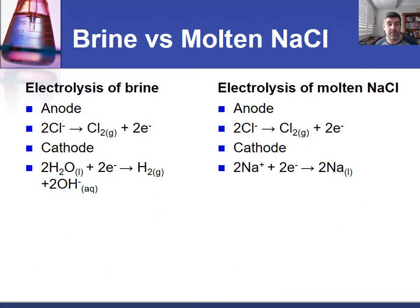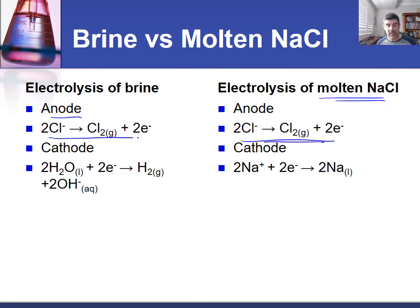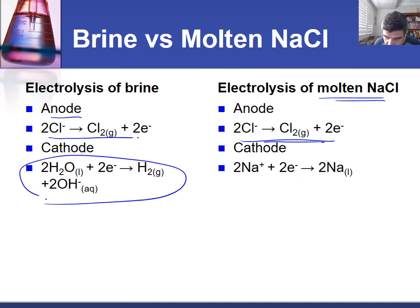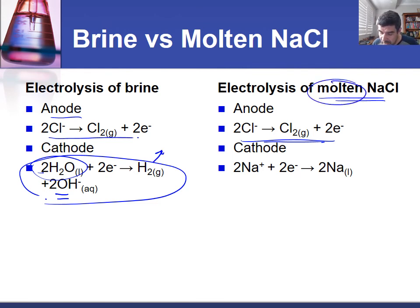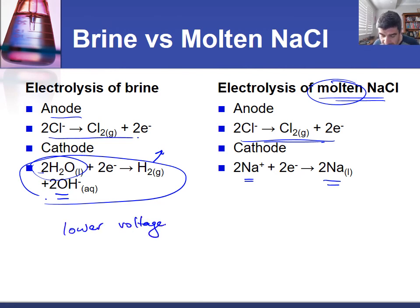So just a quick comparison of the two. When looking at the electrolysis of brine, chlorine gas forms at the anode, and likewise with molten sodium chloride we also have chlorine gas forming. The difference is what's happening at the cathode: with brine, water is reduced to form hydroxide ions and hydrogen gas, whereas with molten sodium chloride, sodium ions are reduced to produce sodium metal. Also, a lower potential difference is required to reduce the water compared to sodium, so the molten sodium chloride process requires a higher voltage.